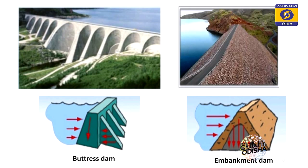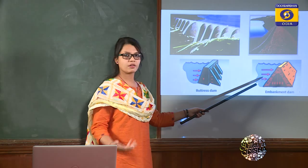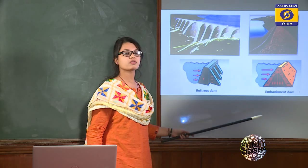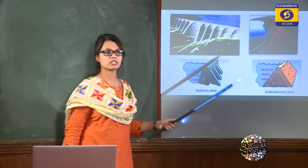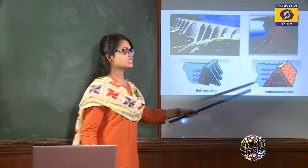An embankment dam is the same as a non-rigid dam, also called an earthen dam. It is made up of earthen and rock materials, and it resists forces due to shear strength.